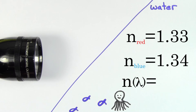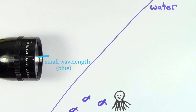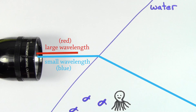In fact, for most materials, the smaller the wavelength of the light, the larger the index of refraction, which means smaller wavelength light will bend more than larger wavelength light will in most materials.